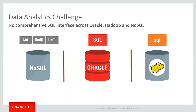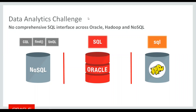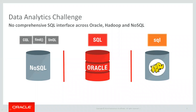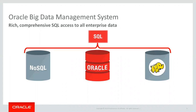Many customers have inside the enterprise different systems — like Oracle database, Hadoop, and many NoSQL databases. Every single system has its own API: it could be Oracle SQL, Hadoop SQL, or inside Hadoop you could have Impala, Hive, Presto, or something else. Every single NoSQL database has its own API, and it's getting quite complicated to support all those APIs.